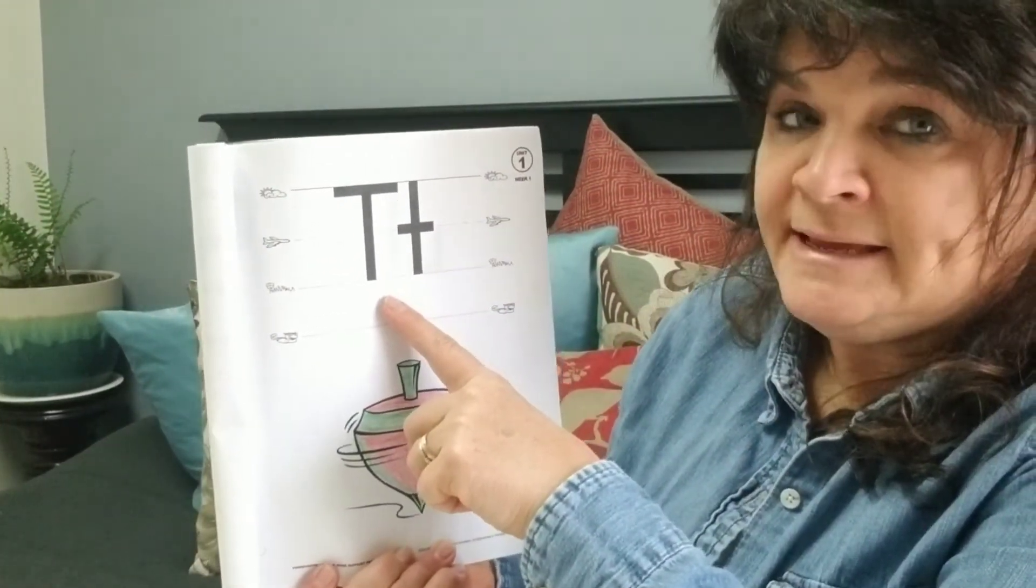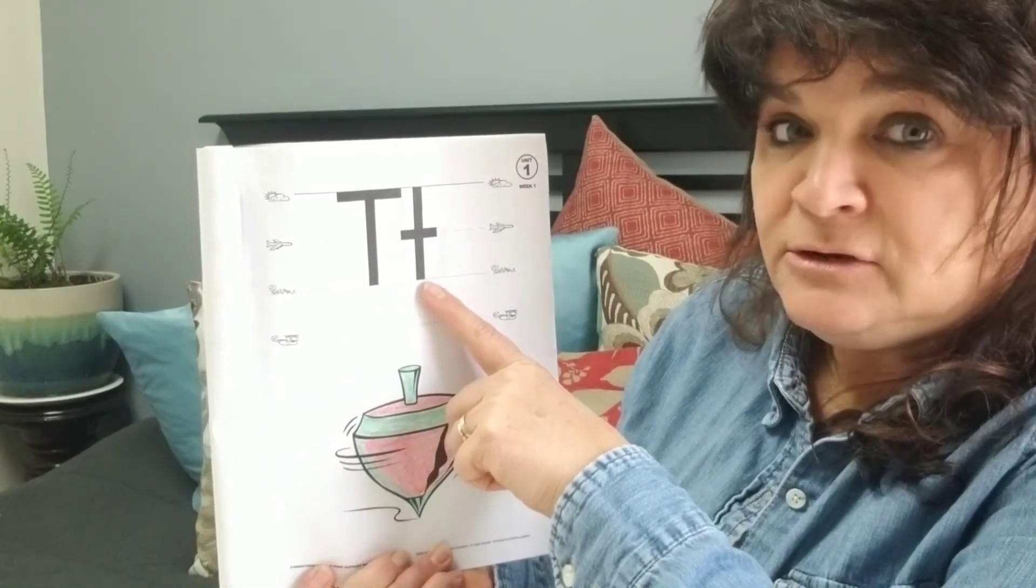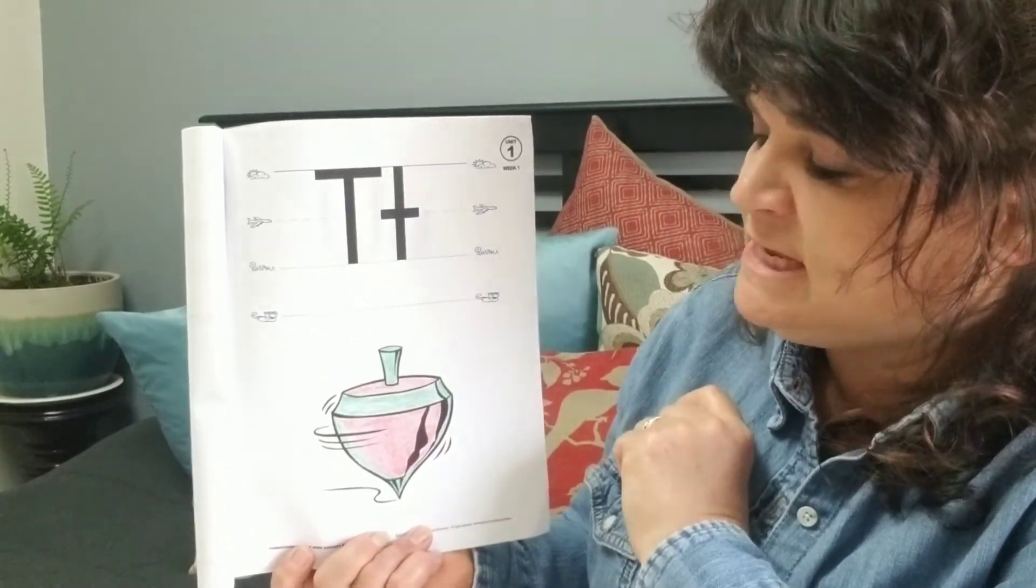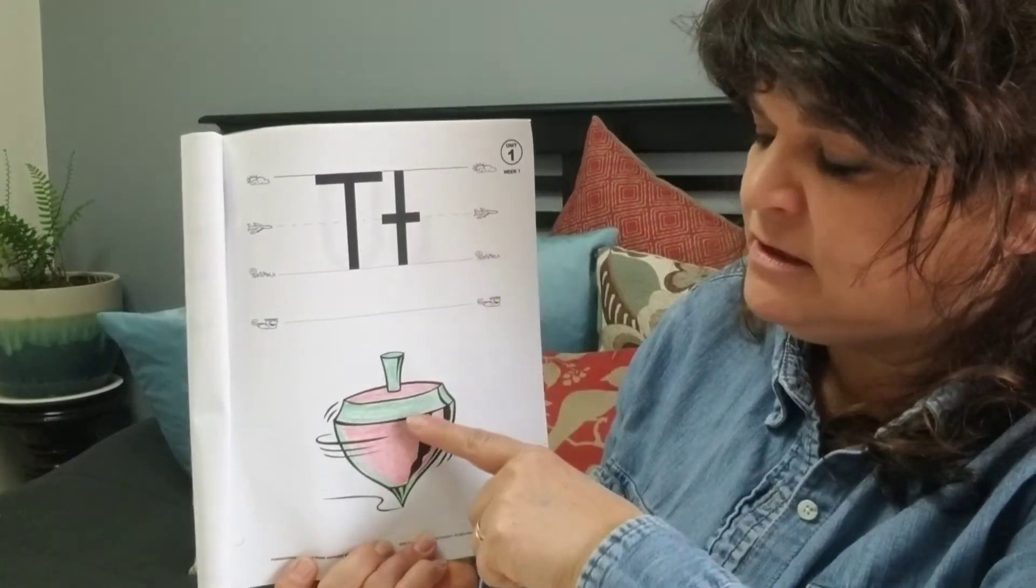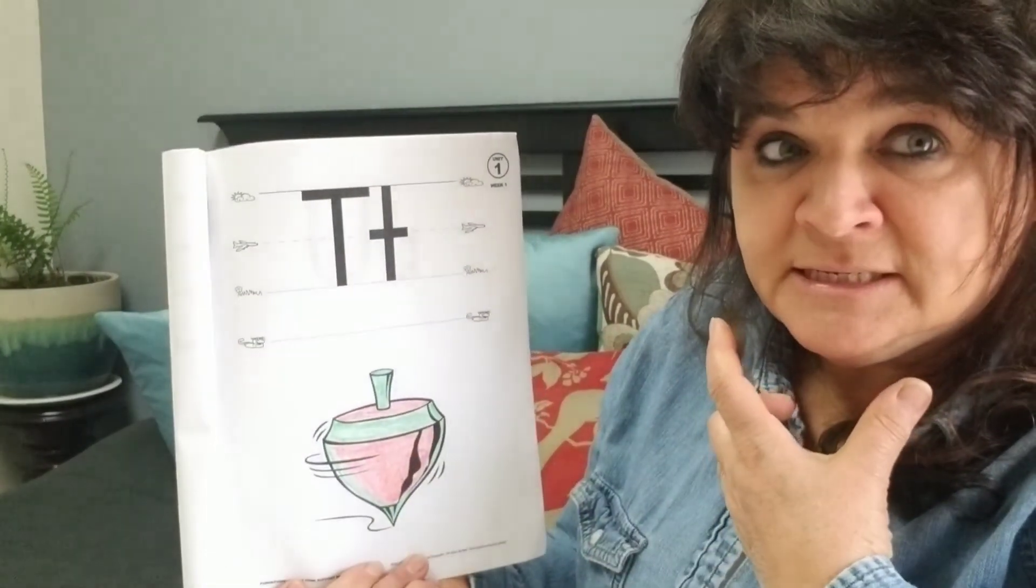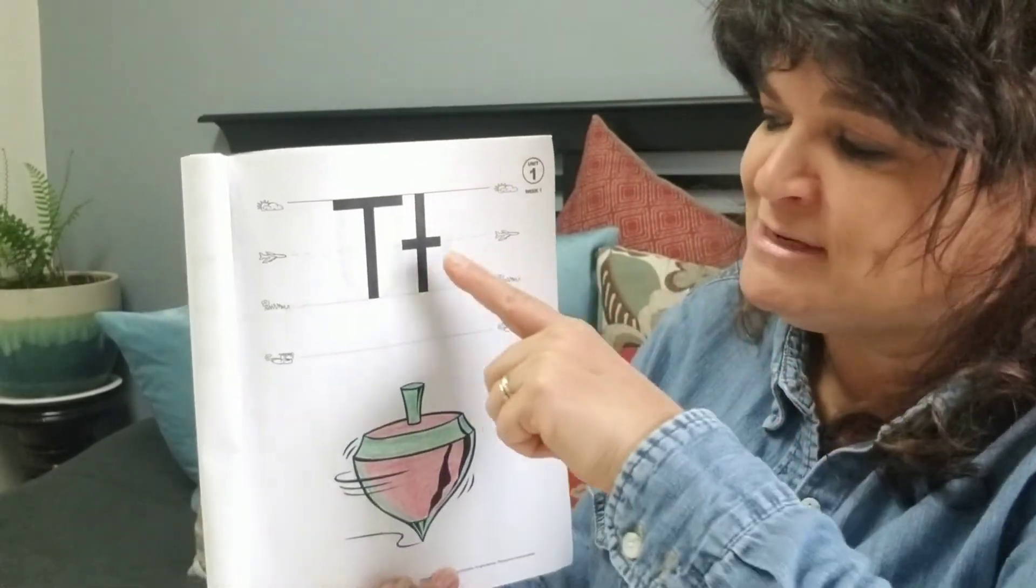This is the letter T. Big T. Little T. The letter T begins words like top. T, top, t. T is the sound the letter T makes.